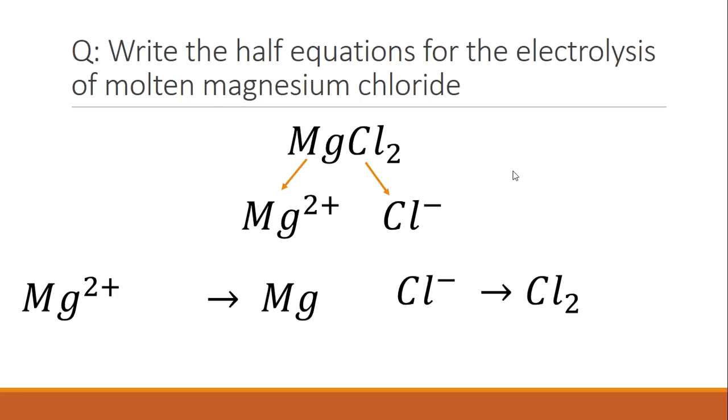We then need to balance the charges. If we look at the magnesium, we've got two positives on this side, we've got nothing on the other side. So like the first example, we have to add two electrons and it is now balanced.